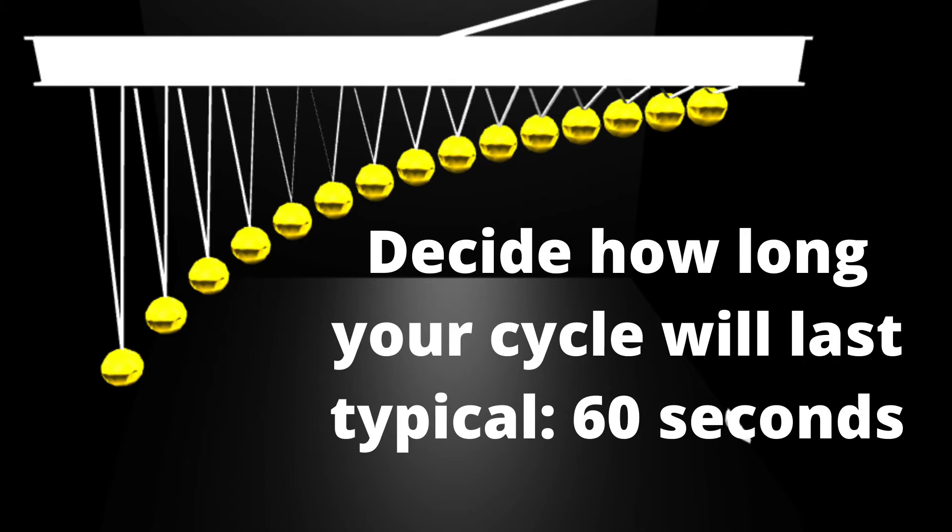Now you need to make a decision on how long you want this dance to last. The typical is 60 seconds and the amount you choose will make a difference in terms of how fast things are going to evolve in the patterns. Also a higher cycle will require you to use longer strings as we will see in the equations.